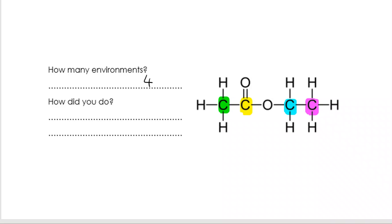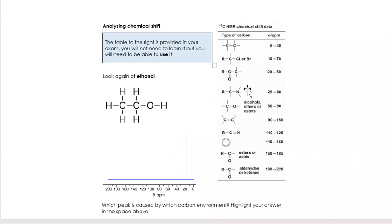This table is provided in the exam and you can use that once you can see the peaks to determine what the structure is. So here we've got ethanol, and we want to see if we can identify which of these peaks is caused by which of these carbons.